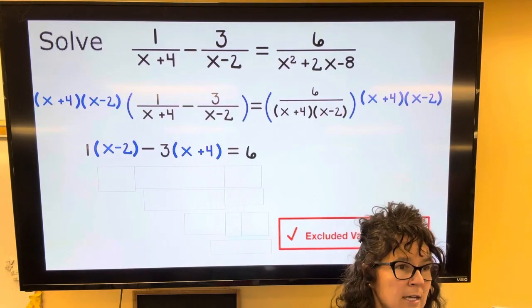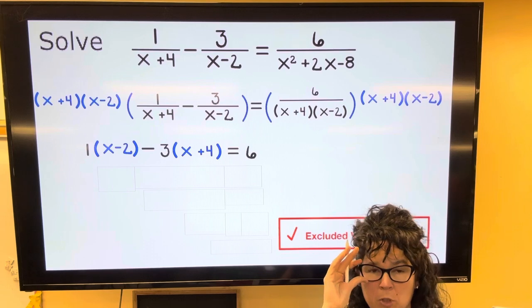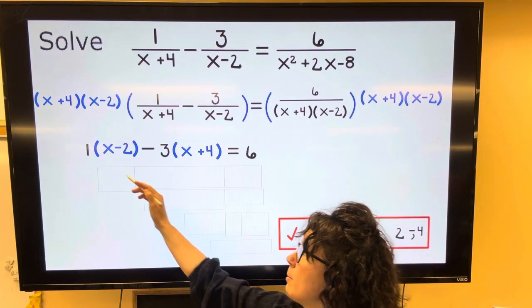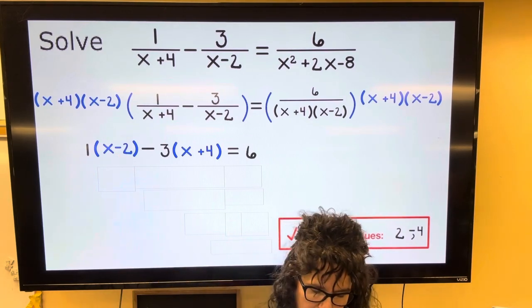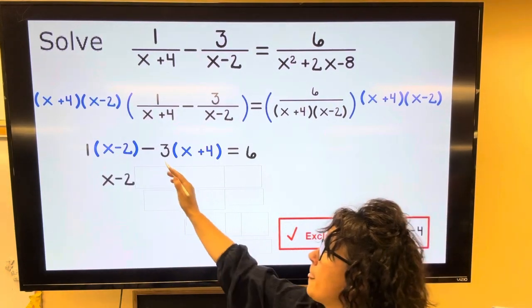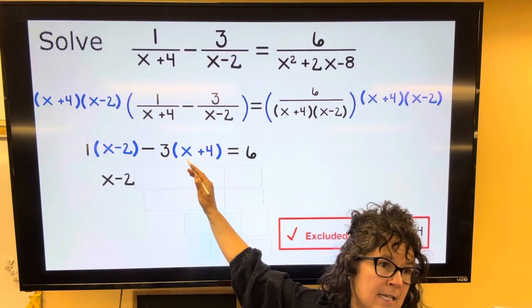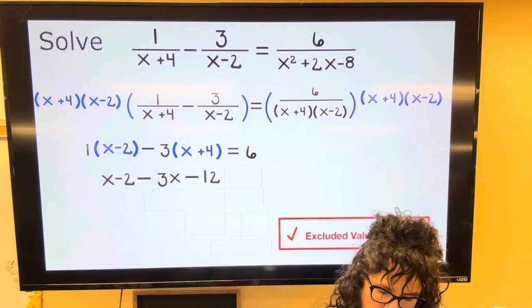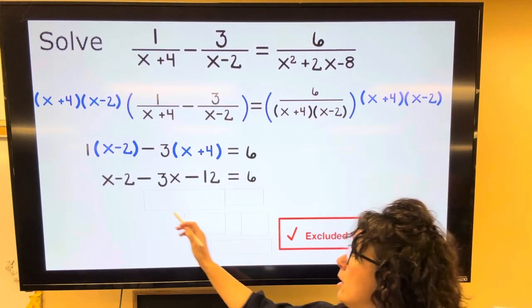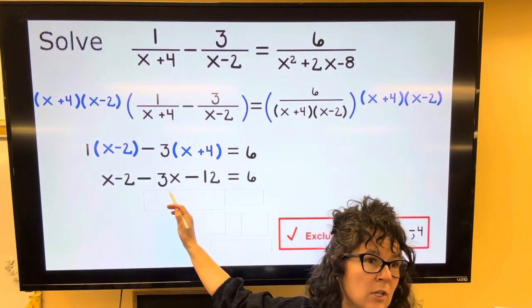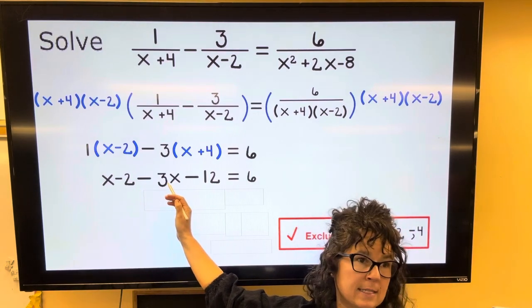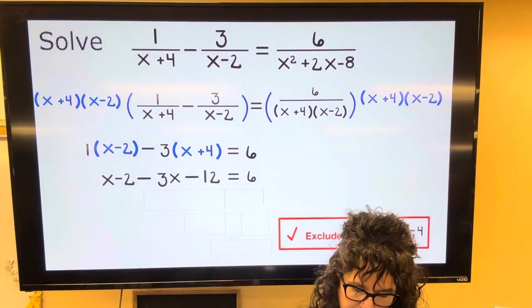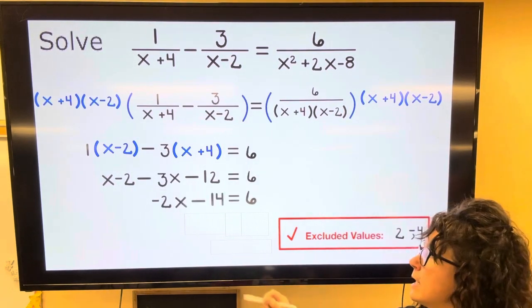This equation has been greatly simplified by multiplying both sides by the denominators. So now let's just do some distributive property. 1 multiplied by x minus 2 is x minus 2. Negative 3 times x is negative 3x and negative 3 times 4 is minus 12 equals 6. These are on the same side, so let's combine those. x minus 3x is negative 2x and negative 2 minus 12 is negative 14. Bring down the equal sign again.